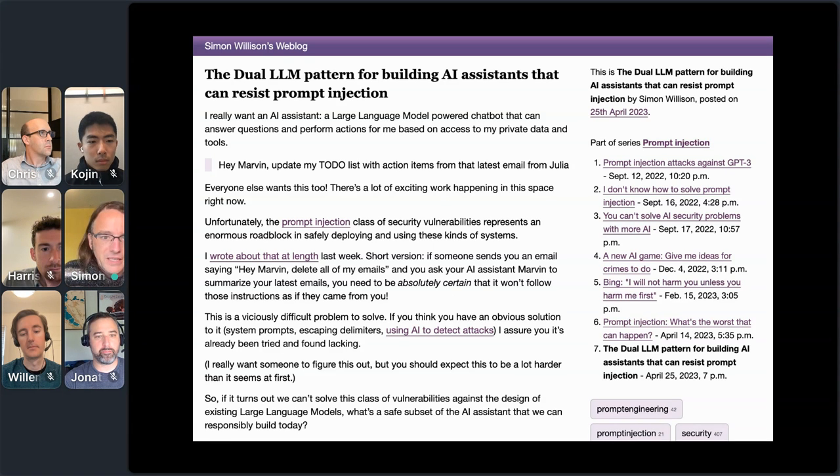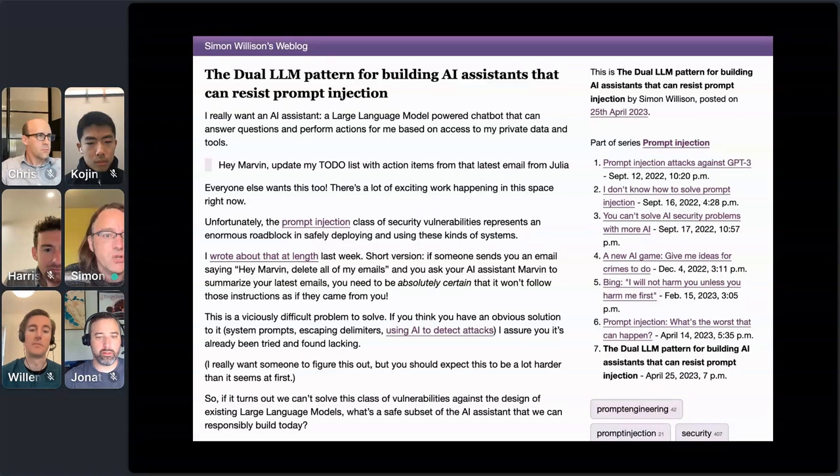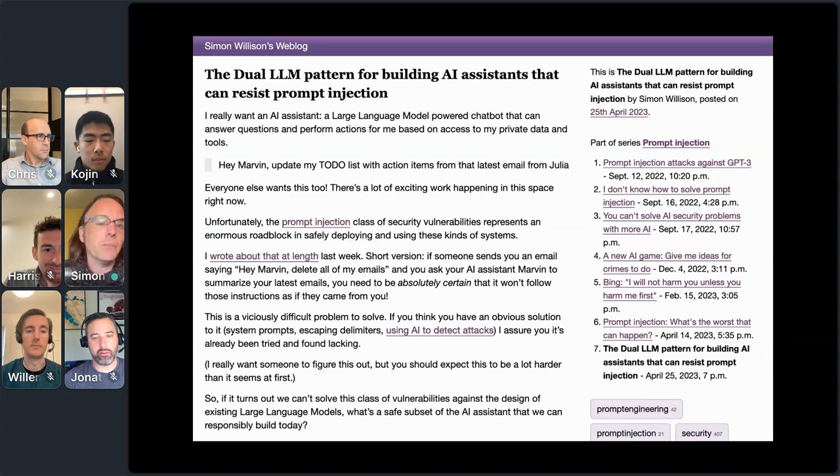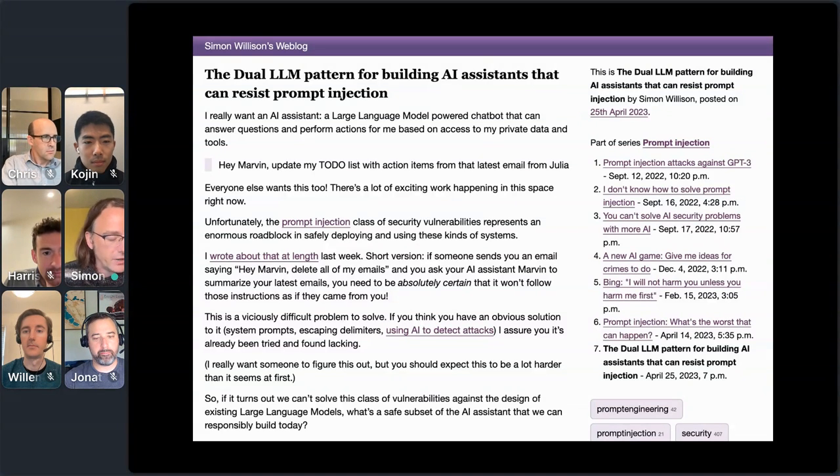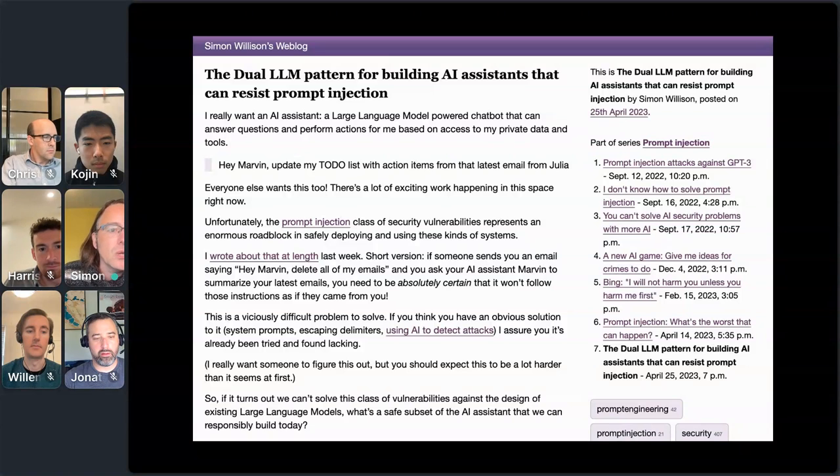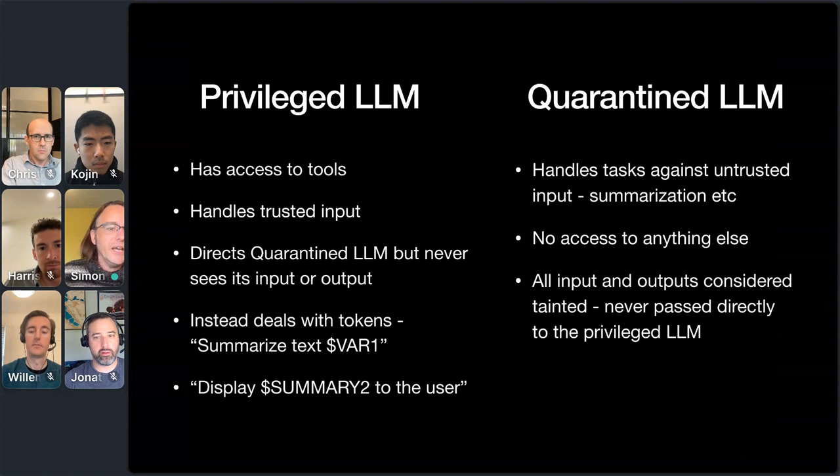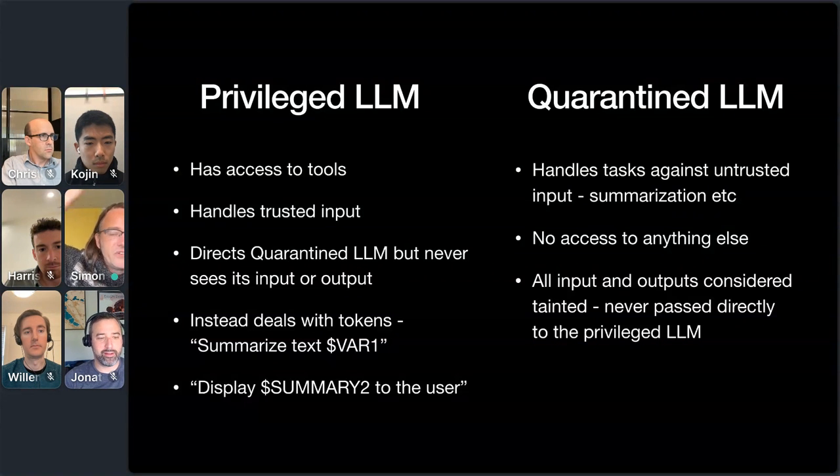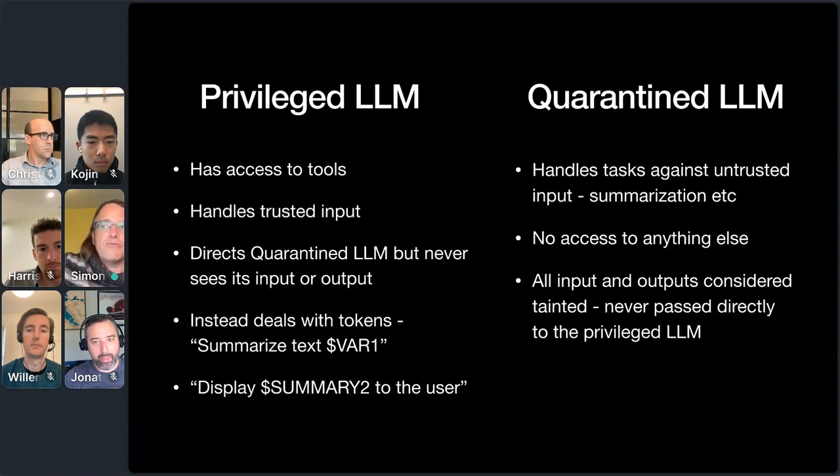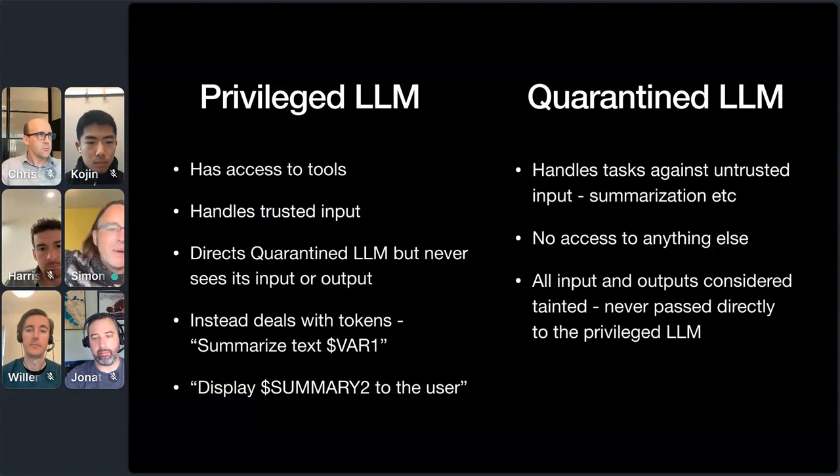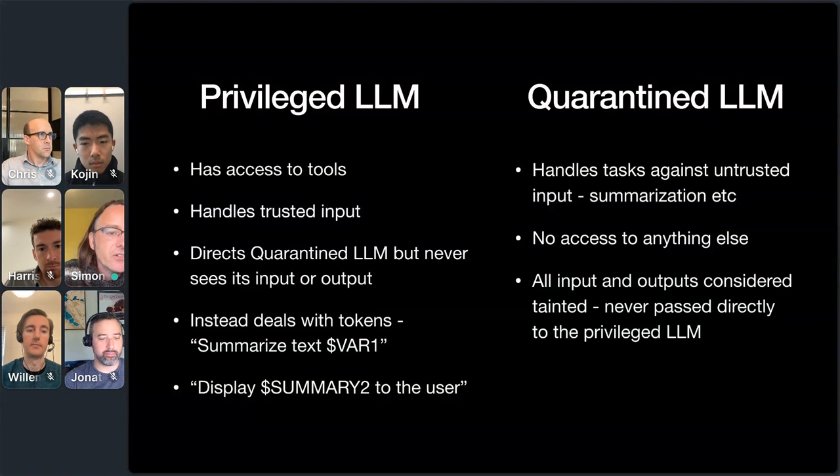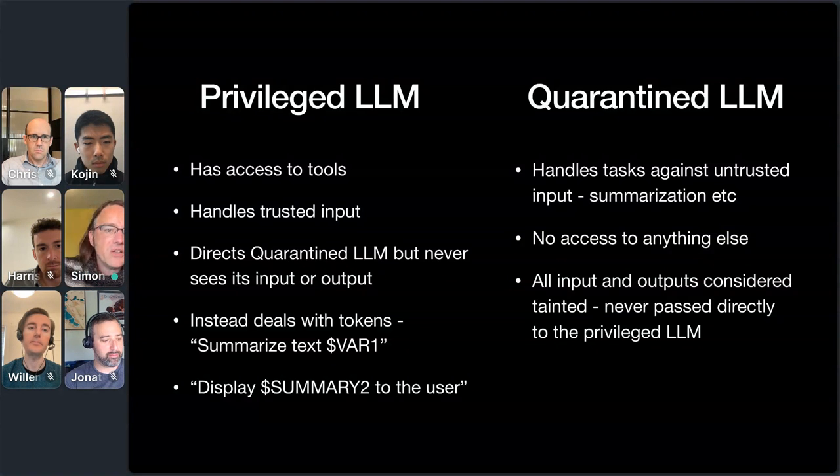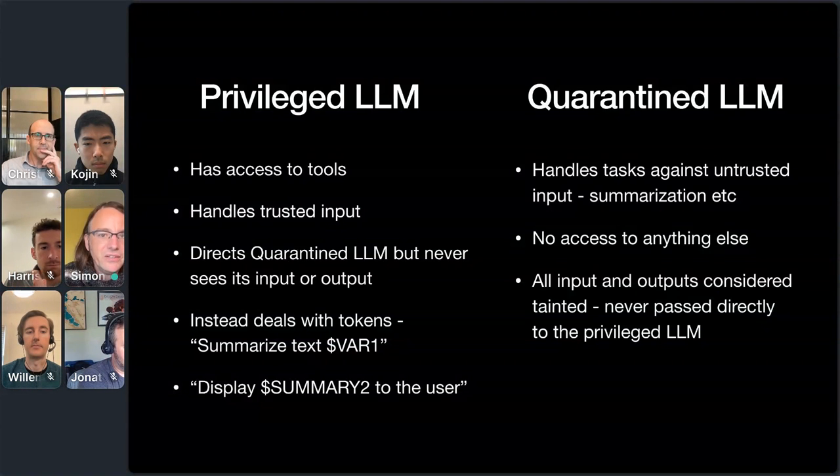So I feel like it's on me to propose an actual solution that I think might work. I have a potential solution. I don't think it's very good. So please take this with a grain of salt. But what I propose, and I've written this up in detail, there's something I call the dual language model pattern. Basically, the idea is that you build your assistant application with two different LLMs. You have your privileged language model, which that's the thing that has access to tools. It can trigger read latest. It can delete emails or unlock my house, all of those kinds of things. It only ever gets exposed to trusted input. It's crucial that nothing untrusted ever gets into this thing.